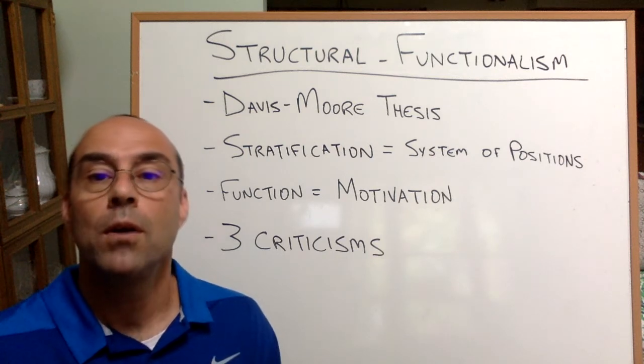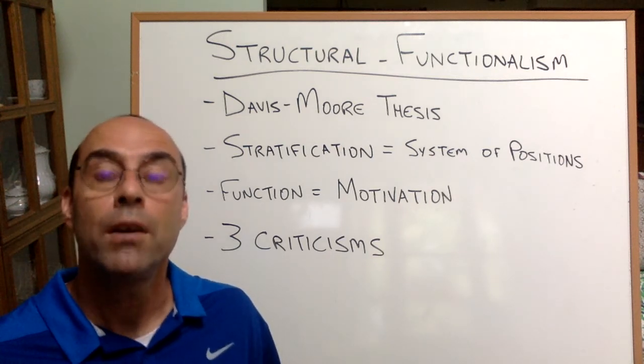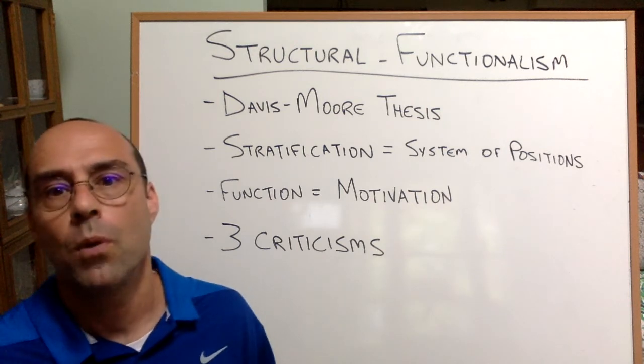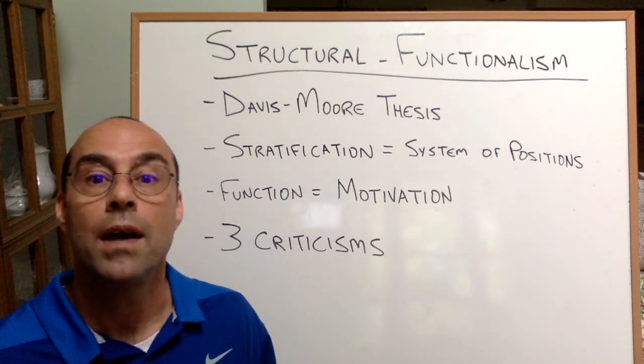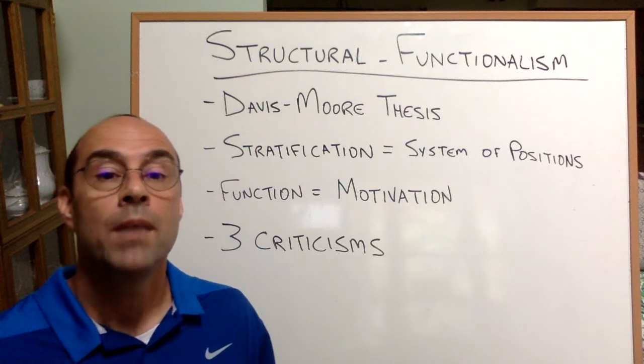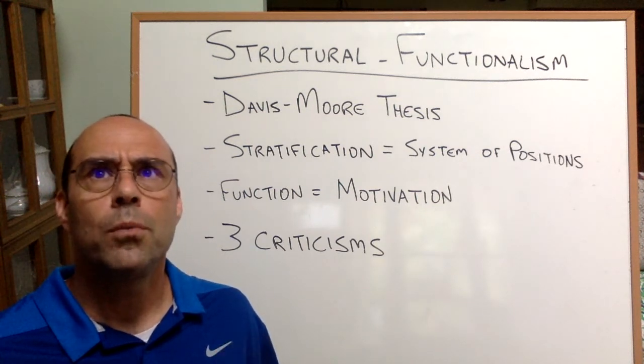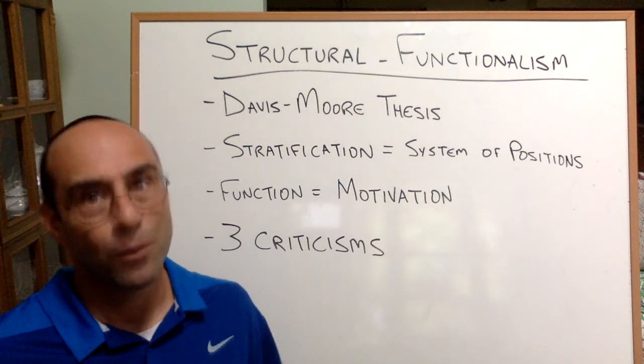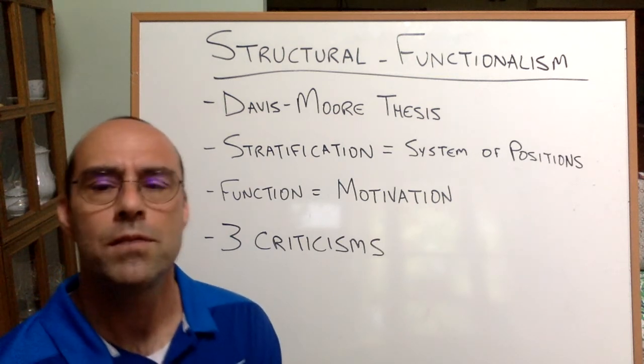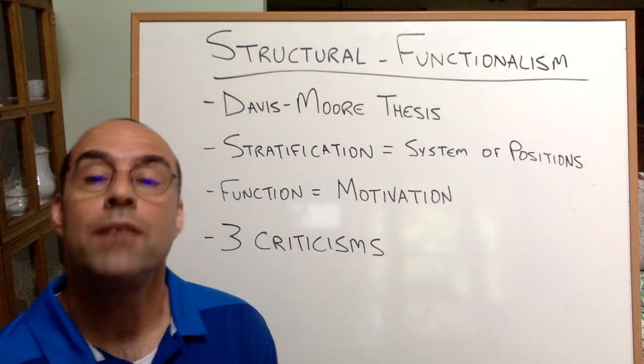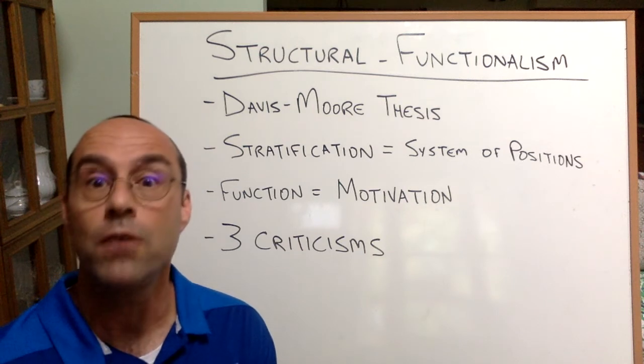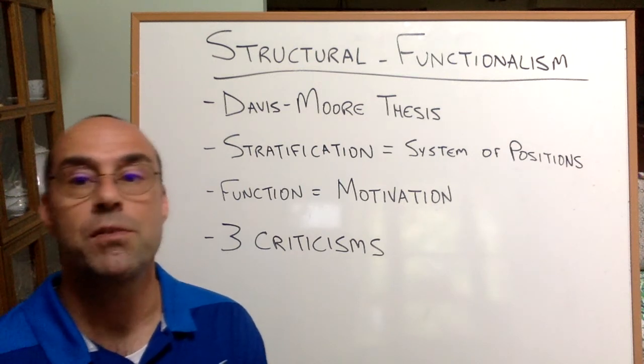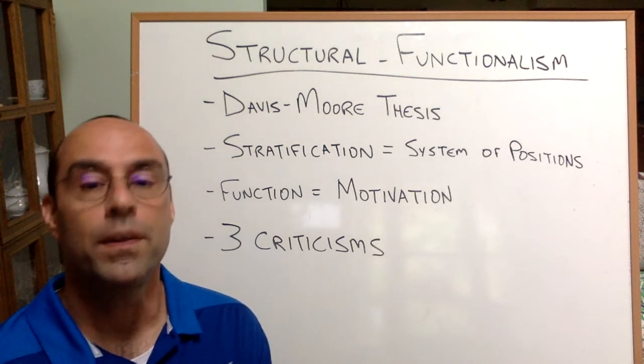Okay, so Davis and Moore come along and they're writing in 1945 and they're interested in doing a structural functional analysis, specifically of the idea of stratification or what we more conventionally call income inequality or economic inequality. They say, we're in the mid-40s and economic inequality has been a part of American society for really forever. So it's a durable element of society. From a functionalist perspective, it must be playing some role, having some important function for the perpetuation of society. So let's try to understand that. That is the point of the Davis-Moore thesis.